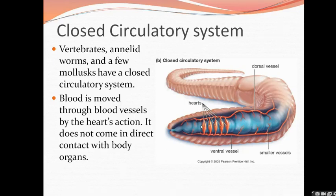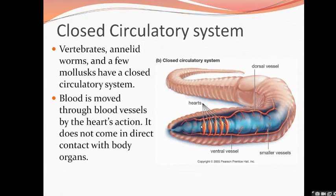Nutrients produced by the digestive system are dumped into the blood, which carries them to each and every cell from head to toe. Whatever waste is produced by cellular metabolic activities is dumped into the interstitial fluid, and through diffusion via the capillaries, all waste material is taken to the respective organs. This is about open and closed circulatory systems. Tomorrow we are going to learn about single and double circulation and understand how the mechanism of circulation operates.